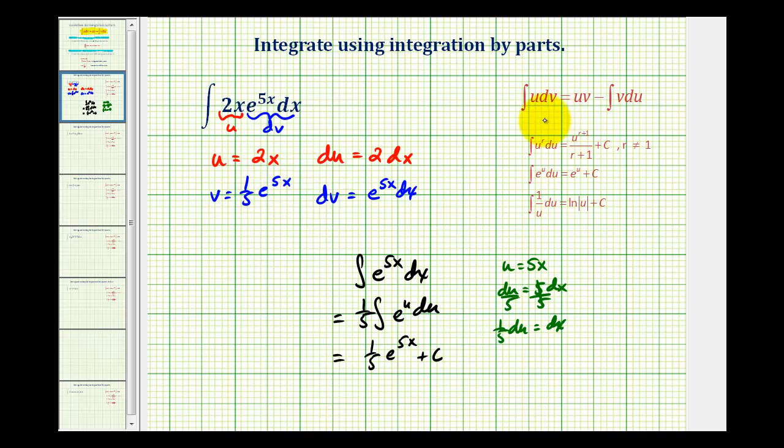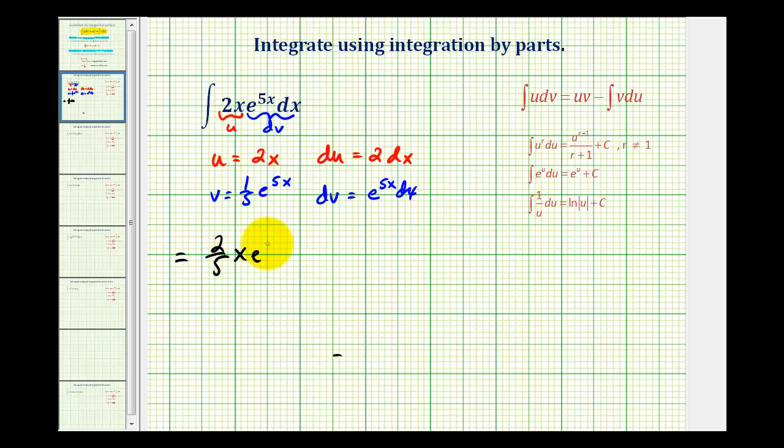Now that we have everything, we can apply the integration by parts formula. So the original integral is equal to u times v. Well here's u and here's v, so we'll have 2/5ths x e to the 5x minus the integral of v du. Well here's v and here's du. So notice we'll have 2/5ths e to the 5x dx.